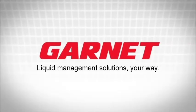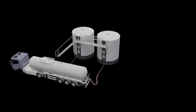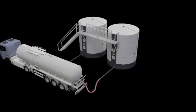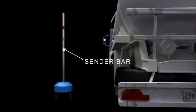Garnet C-level gauges make liquid management simple. The Garnet C-level gauge system works by first tracking the fluid level in a tank using a stainless steel sender bar.